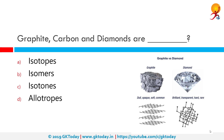Graphite, carbon and diamonds are allotropes of each other. Some chemical elements are known to exist in two or more different forms because the atoms are bound together in different manners. The most common example is carbon, which exists in diamond, graphite and other forms. Allotropes only exist for elements and not for compounds.